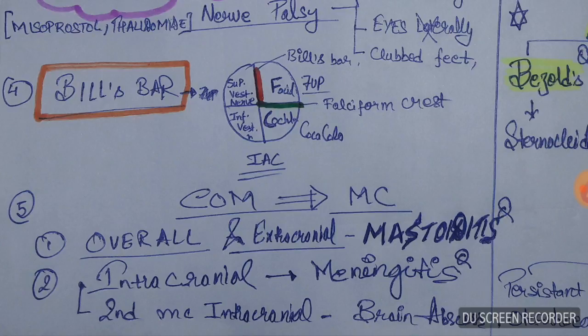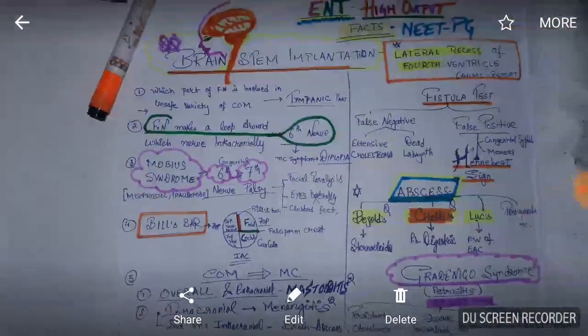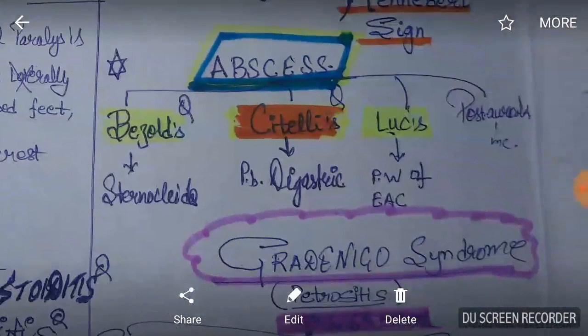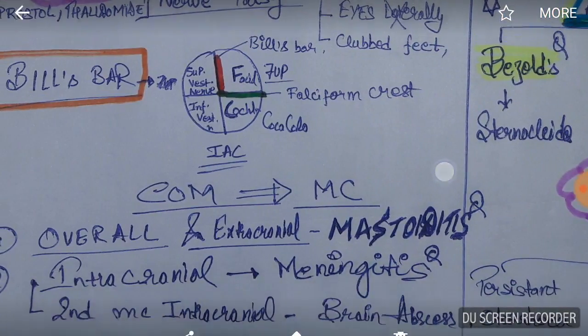The most common complication of chronic otitis media overall is mastoiditis, which is extracranial. The most common intracranial complication is meningitis, and the second most common intracranial complication is brain abscess.